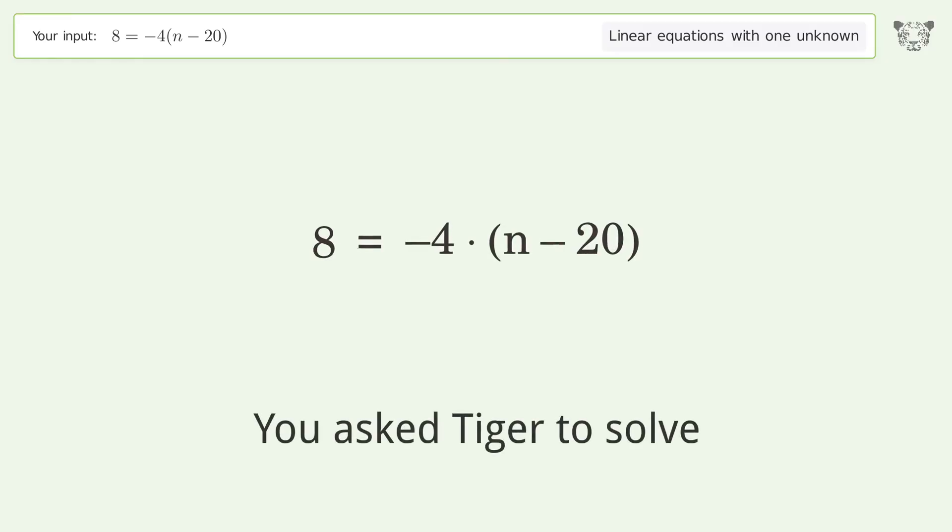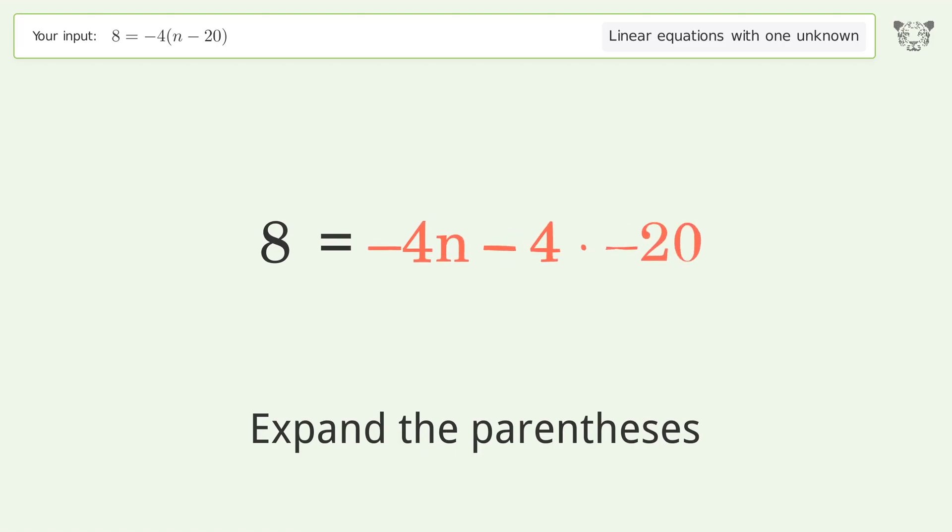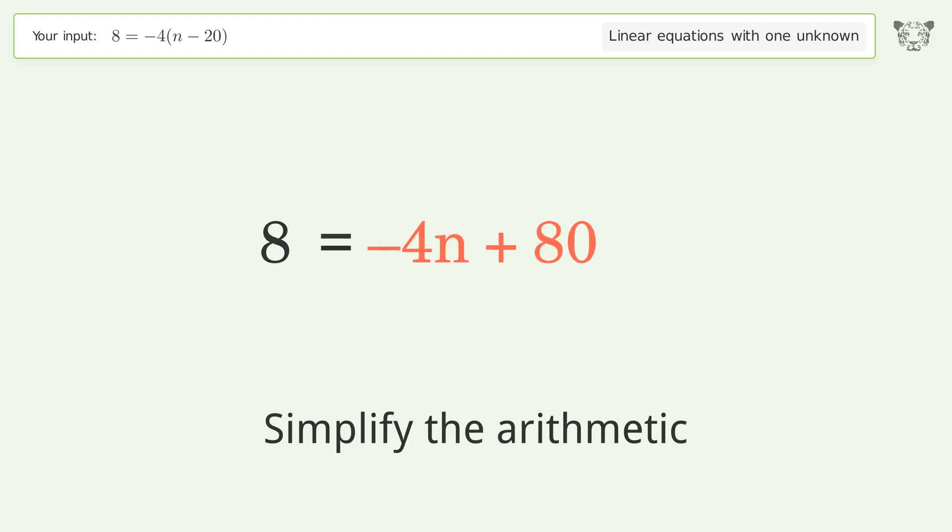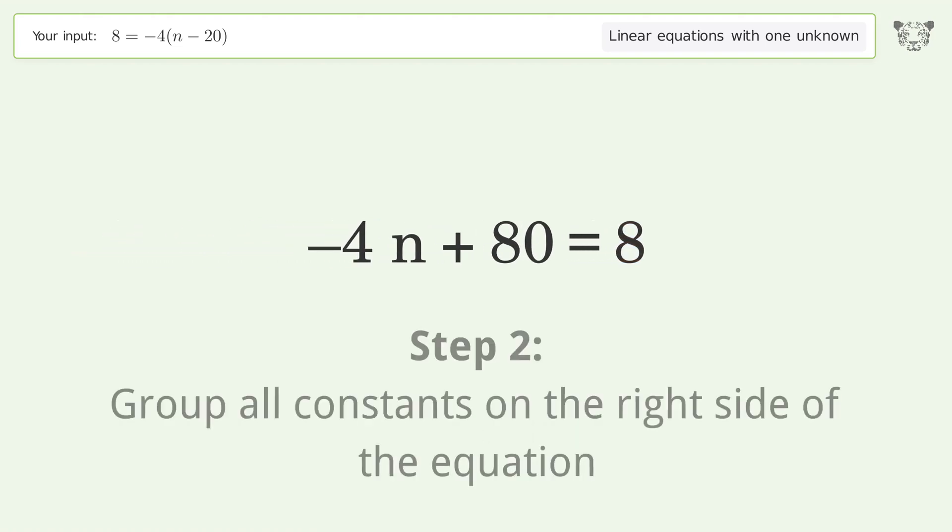Let's solve this linear equation with one unknown. The final result is n equals 18. We'll solve it step by step. First, simplify the expression by expanding the parentheses. Then simplify the arithmetic, swap sides, and group all constants on the right side of the equation.